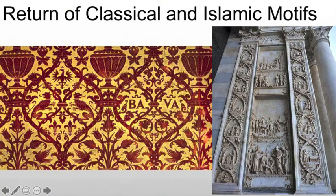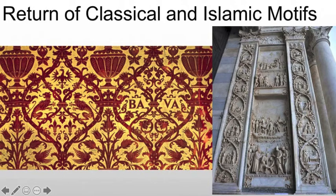For example, we see the return of classical and Islamic motifs. This is going to be important for a couple of reasons. First of all, the Renaissance is looking back at the Greeks and the Romans for inspiration. Being surrounded, especially in Italy, by Roman ruins, they're going to use some of their ideas, such as the use of acanthus — that sort of floral vine work that we tend to see.